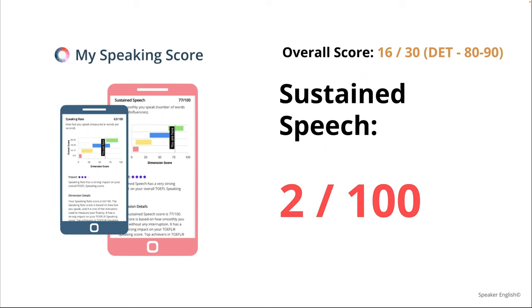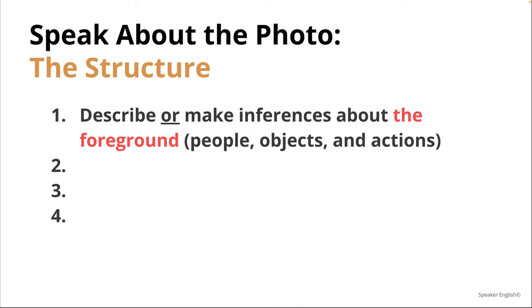One of the easiest things to focus on is your structure — before pronunciation, before vocabulary and grammar, the easiest thing is to learn how to answer these questions for this test. He scored two out of 100 on sustained speech, meaning he doesn't speak smoothly — each word is pronounced with a stop. One way to get better at this is to have a structure, a template that you can use to answer any of these Speak About the Photo questions.